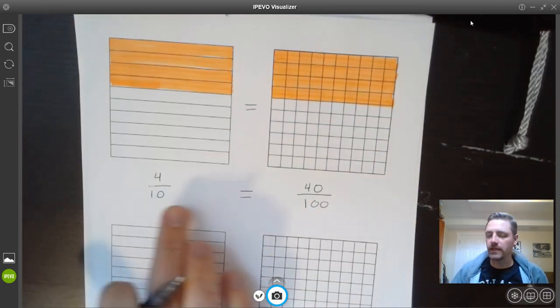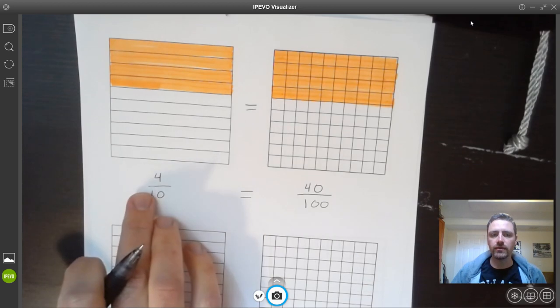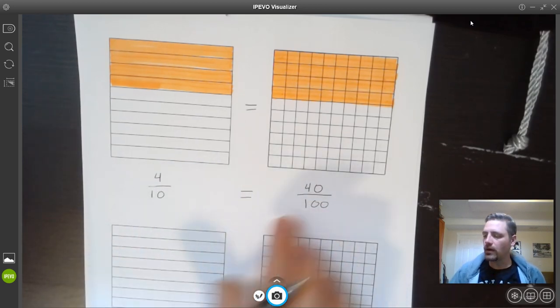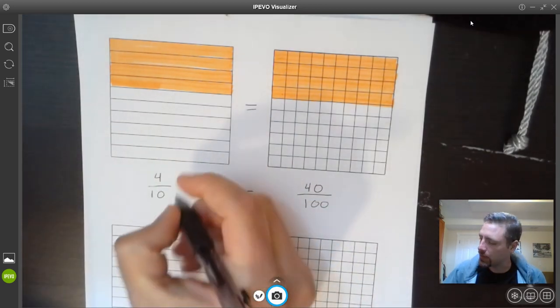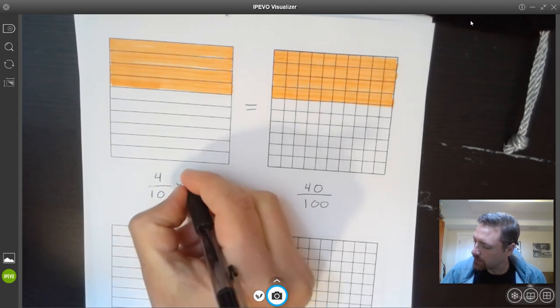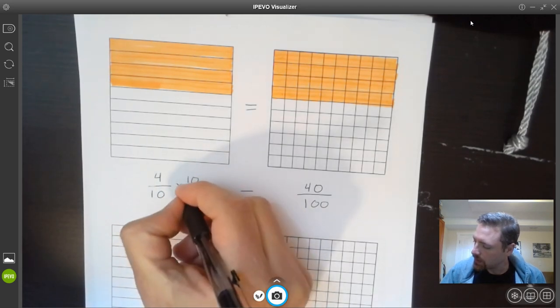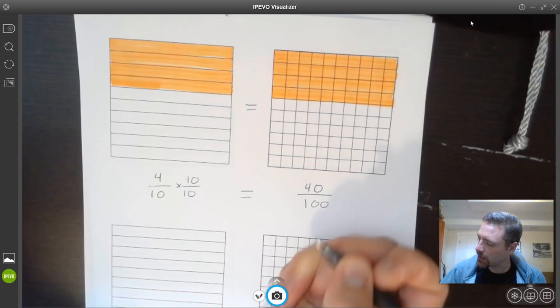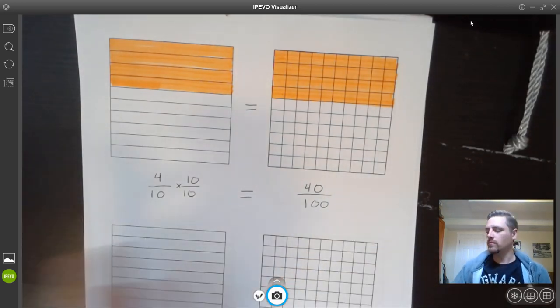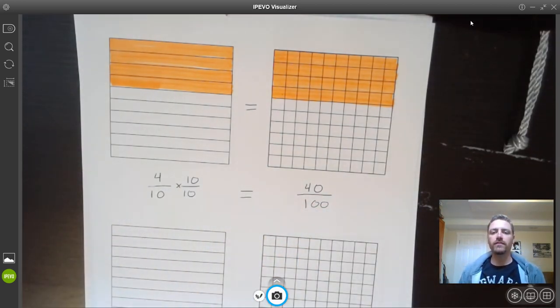So I know now that I have 40 one-hundredths. And so if we look at these, we know when we're going from tenths to hundredths, all we really need to do is multiply times 10 on the top and 10 on the bottom. And that will get us to the equivalent fraction.